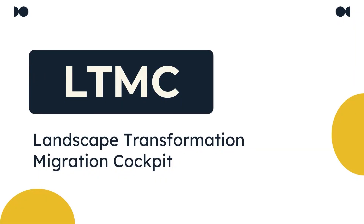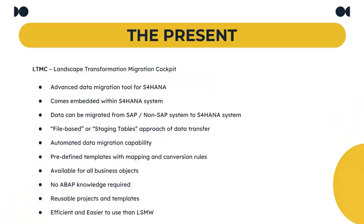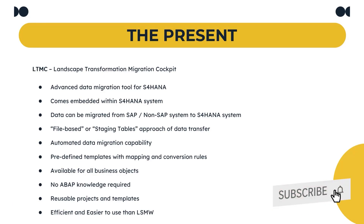LTMC stands for Landscape Transformation Migration Cockpit and is an enhanced version of LSMW. SAP recommends using LTMC instead of LSMW in S4 HANA due to its advanced capabilities. Similar to LSMW, LTMC is also an embedded tool that comes along with every S4 HANA system and can be used to migrate data from SAP or non-SAP systems using either a file-based approach or via staging tables. It is an automated migration cockpit which contains predefined templates with all the necessary mapping and conversion rules for various business objects.